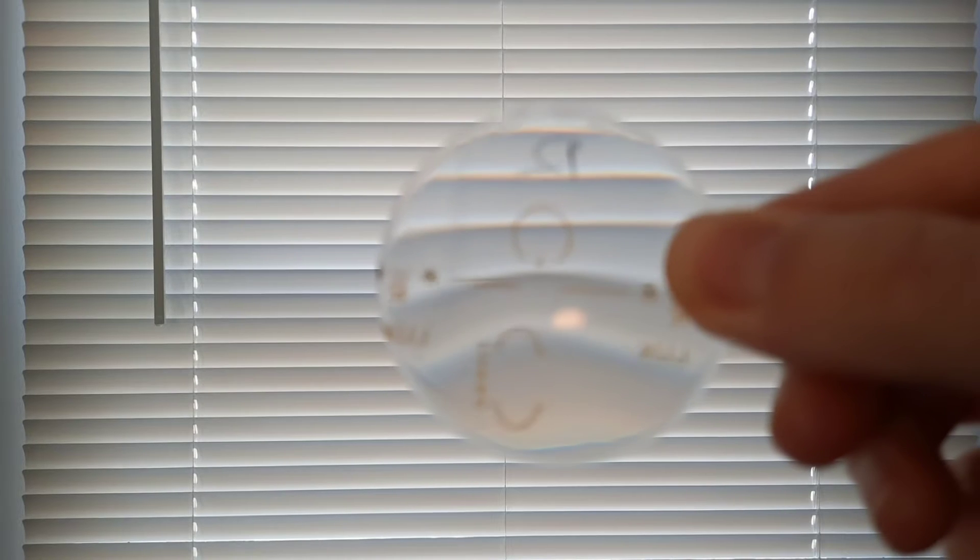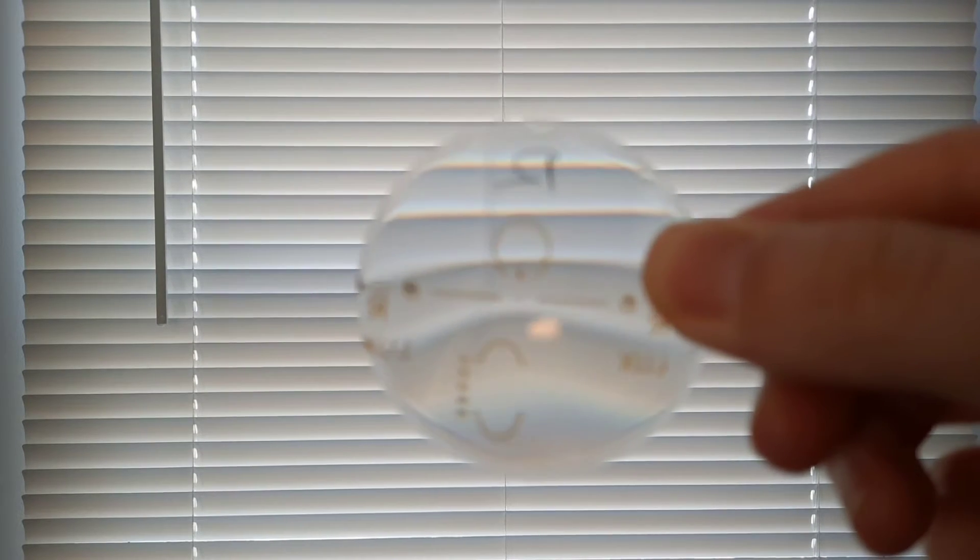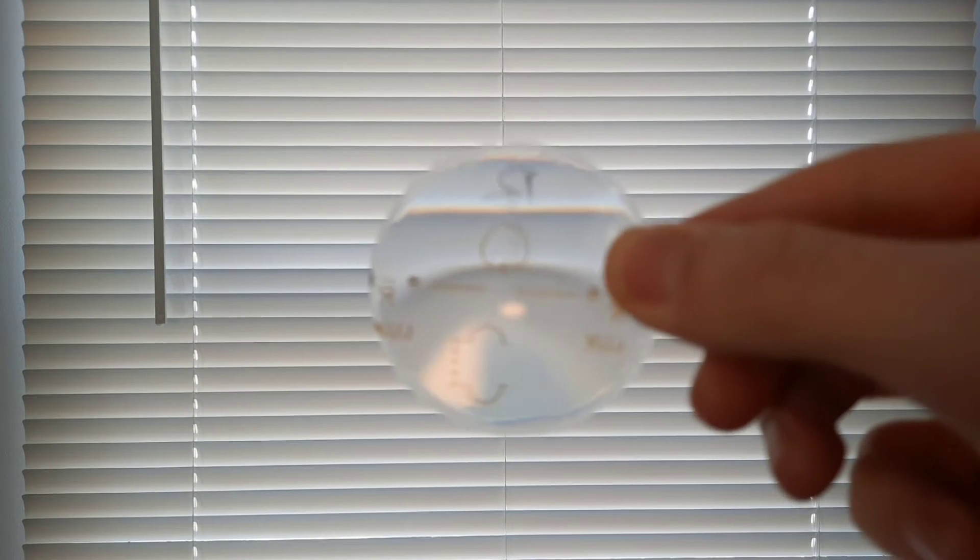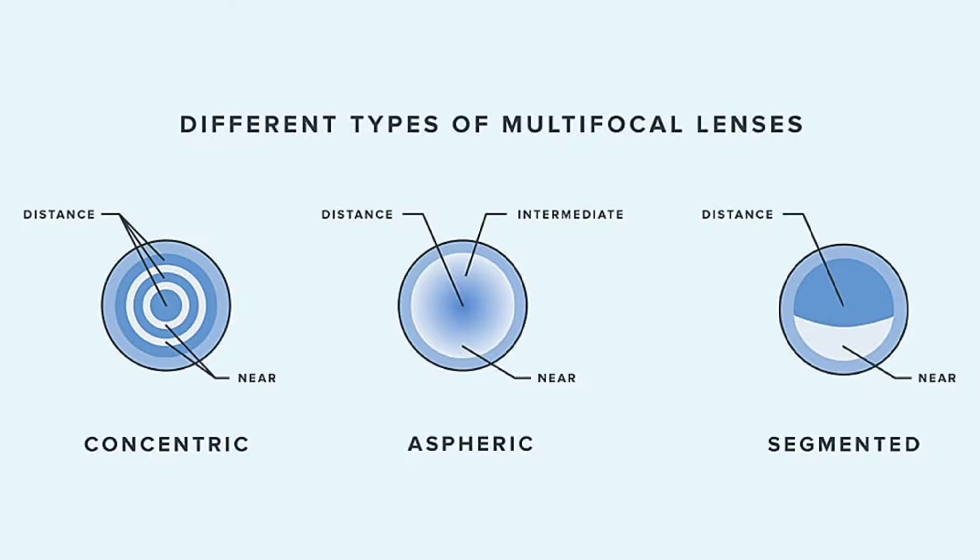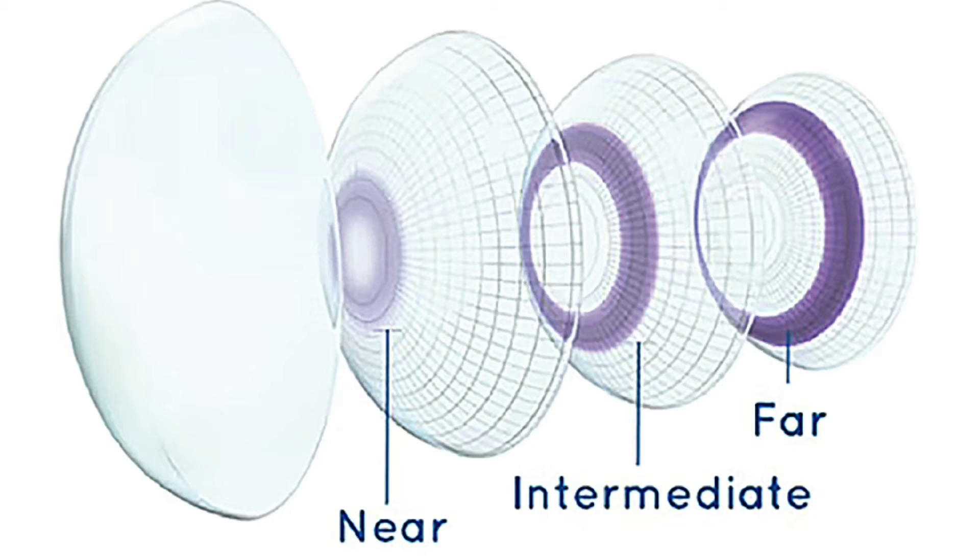Looking through this progressive lens, you can see the bottom bending light more than the areas above it. You can even get multi-focal contact lenses that also have different zones on them with different powers.